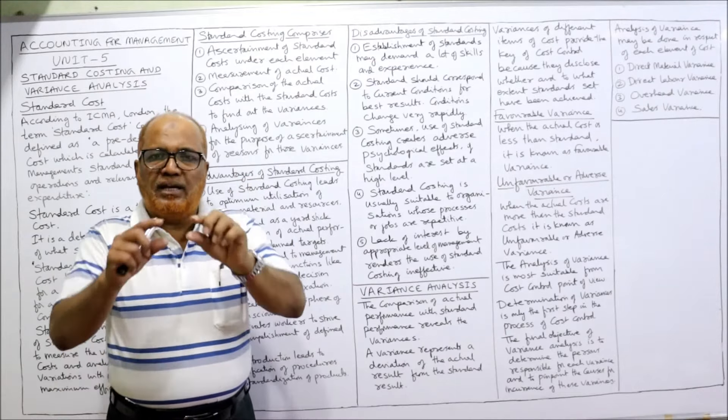An unfavorable or adverse variance is one in which the actual cost is more than the standard cost. For example, if the standard cost is five lakh rupees but the actual cost is six lakh, then one lakh rupees is called adverse variance or unfavorable variance. The analysis of variance is most suitable from a cost control point of view. The main purpose of standard costing is to control the cost. Finding the variation between standard and actual cost is only the first step in the process of cost control.